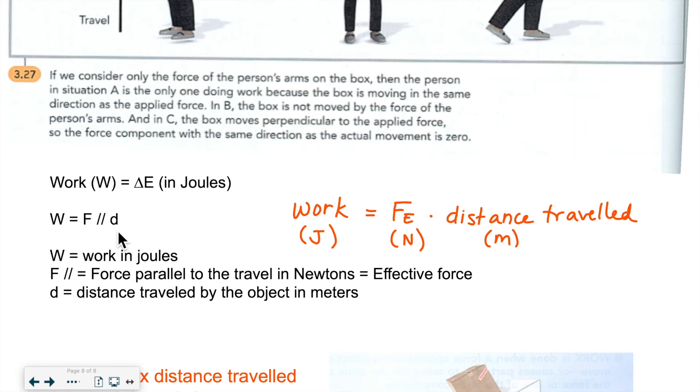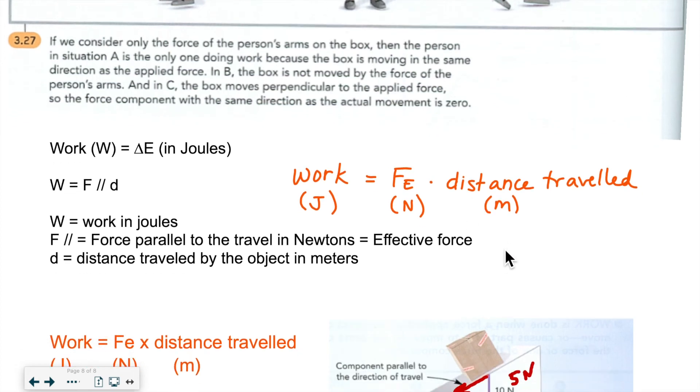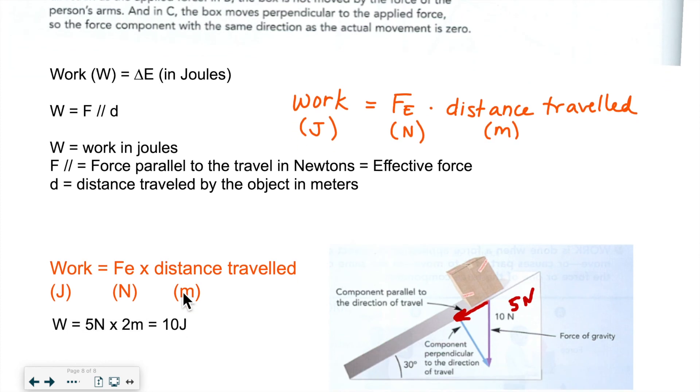So again, if it's parallel to the distance covered, we're really talking about effective force. So I like to write it this way: work, which is measured in joules, is equal to the effective force, and we know that forces are expressed in newtons, times the distance traveled, and the distance is always expressed in meters. So we have it here, I retyped it a little bit more neatly, and I have a little example.